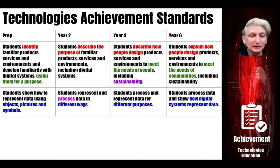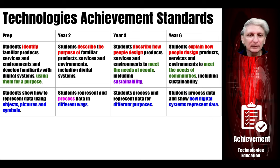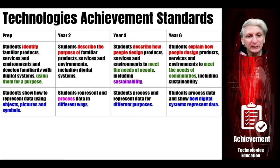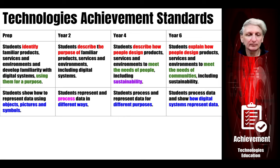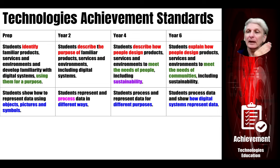Around data, students start off looking at objects, pictures, and symbols representing various elements of data. In year two, they learn how to process that data in different ways and make use of it. By the end of year four, they need to use the same set of data for different purposes. By year six, they need to be using digital systems — spreadsheets and other tools — to explore and represent that data. Again, a clear progression of development over the year bands.